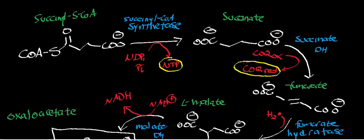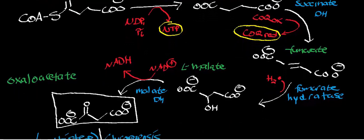Fumarate reacts with fumarate hydratase in a hydration across the alkene, giving L-malate. The D-isomer of malate is not observed. L-malate then reacts with L-malate dehydrogenase in an NAD-dependent oxidation: the hydroxyl group on malate is oxidized to a carbonyl, yielding oxaloacetate and NADH. So when succinyl-CoA is funneled into the TCA cycle, the energy-yielding products are a nucleoside triphosphate, reduced CoQ, and NADH.